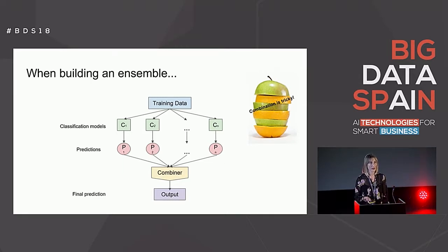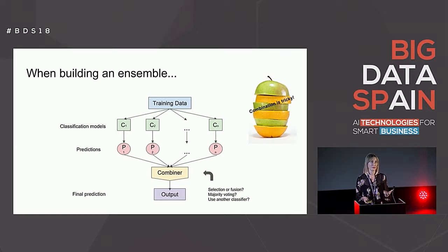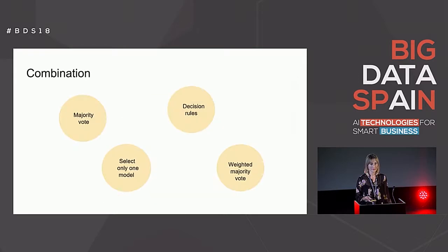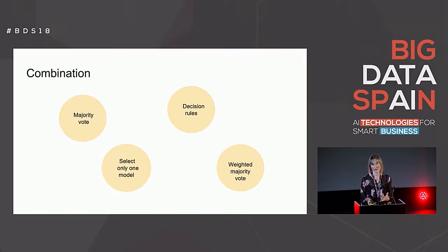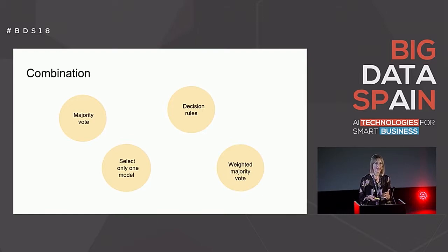To combine the different predictions, we have different approaches. For example, we can do a selection of the best model, a fusion of them using majority voting, using another classifier — multiple options. Majority vote is what we usually do in democracy and in many aspects of our daily lives. Sometimes majority vote is not enough and we need a weighted majority vote, like in the case of the paper review example — some opinions are more important than others. And there are classifiers that give not only a prediction but also a probability, so if we have the probability we can use decision rules such as sum or product to combine the results.